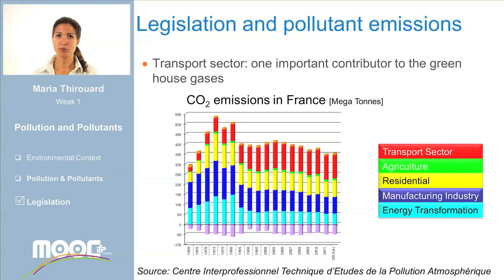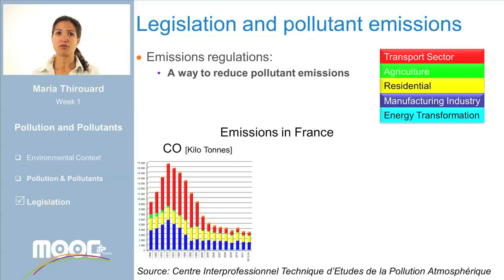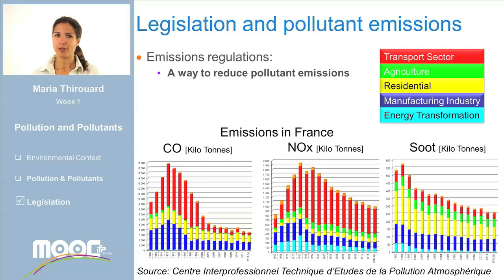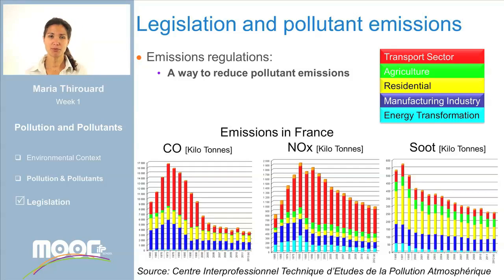The transport sector is one main contributor to greenhouse gases. In this graph, you can see an example of CO2 emissions in the atmosphere throughout the years in France. In red, you have the transport sector. CO2 produced by the transport sector is around 20% of the total emissions. You can see here the emissions of CO, NOx, and particulates emitted throughout the years in France by different contributors. Again, in red, you have the transport sector. You can see that the part of those pollutants produced by the transport sector is very high. You can also see that there is a continuous reduction of the pollutant emissions over the years. This is a consequence of cleaner engine technologies introduced by car manufacturers as a response to emissions regulations.